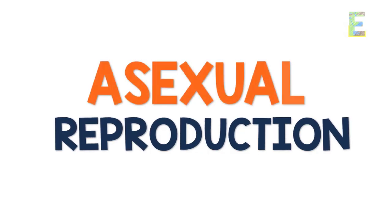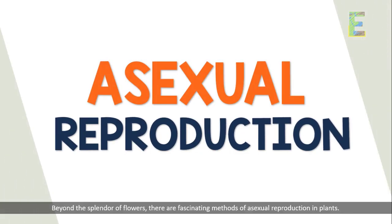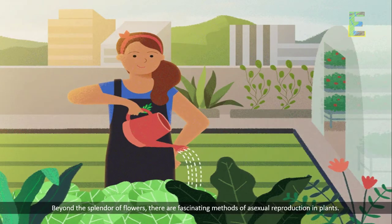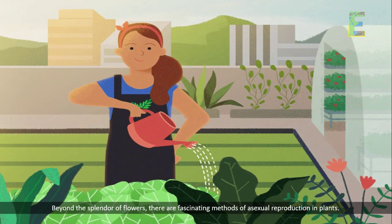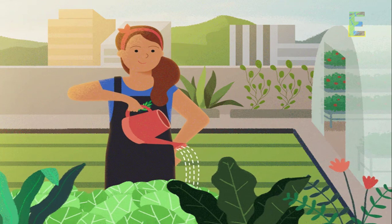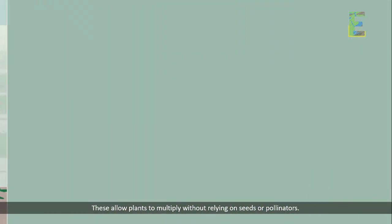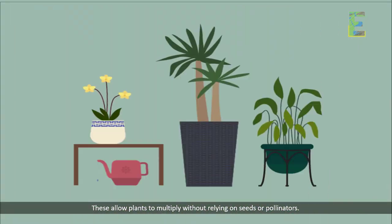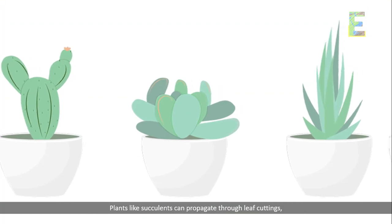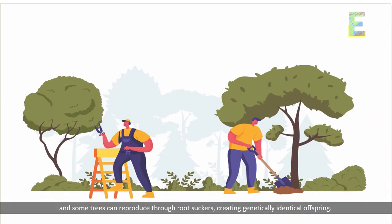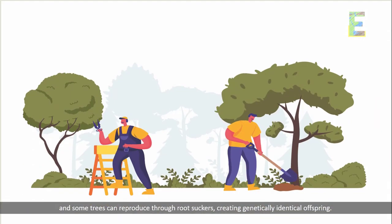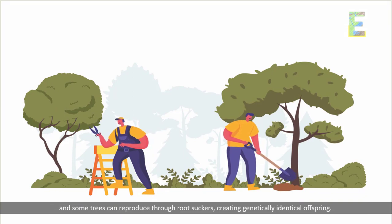Asexual reproduction: beyond the splendor of flowers, there are fascinating methods of asexual reproduction in plants. These allow plants to multiply without relying on seeds or pollinators. Plants like succulents can propagate through leaf cuttings, and some trees can reproduce through root suckers, creating genetically identical offspring.